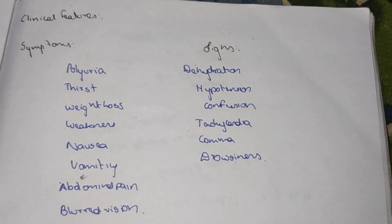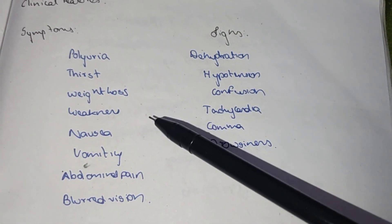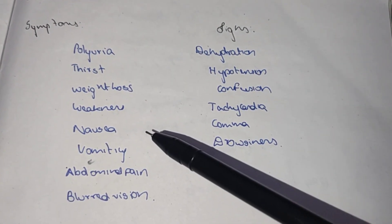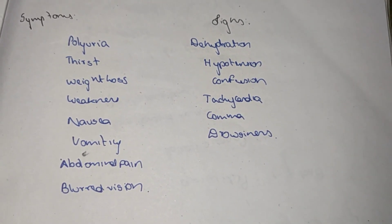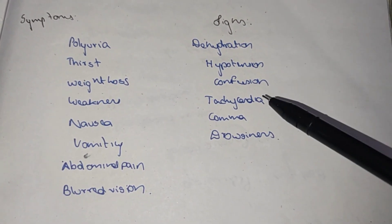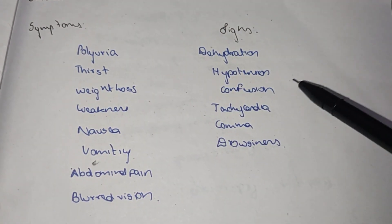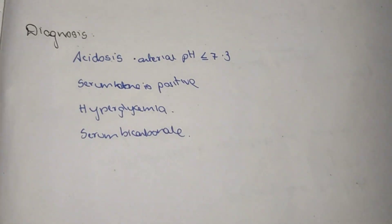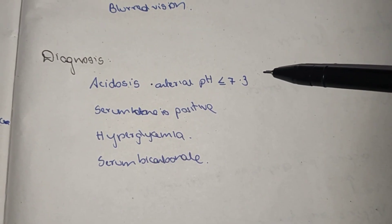Clinical features — symptoms and signs of diabetic ketoacidosis: polyuria, thirst, weight loss, nausea, vomiting, abdominal pain, dehydration, hypotension, confusion, tachycardia (increased heart rate), coma, and drowsiness. These are the signs and symptoms of diabetic ketoacidosis.